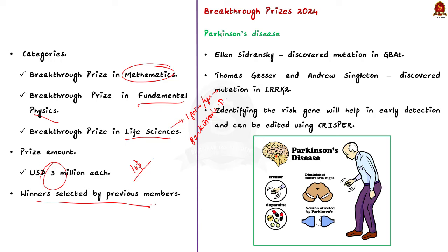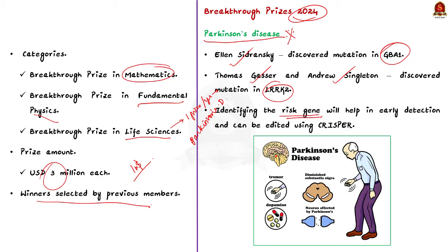Now let us see the contributions made by laureates for the 2024 Breakthrough Prize in life sciences. Ellen Sidransky, Thomas Gaser, and Andrew Singleton were awarded for their work related to Parkinson's disease. They discovered a mutation in a known gene called GBA1 and also identified another risk gene called LRRK2. Once we identify the risk gene associated with a disease, we can reasonably predict the likelihood of a person developing that disease.